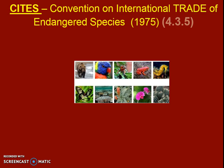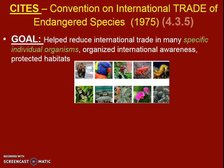CITES is really important and many students just completely forget about it. CITES is the Convention on International Trade of Endangered Species. We've been talking about how species are labeled under the Red List, and all those endangered species are going to be covered under this. The goal is to help reduce international trade in many specific organisms, organize international awareness, and protect their habitats — but this is a very species-based approach.